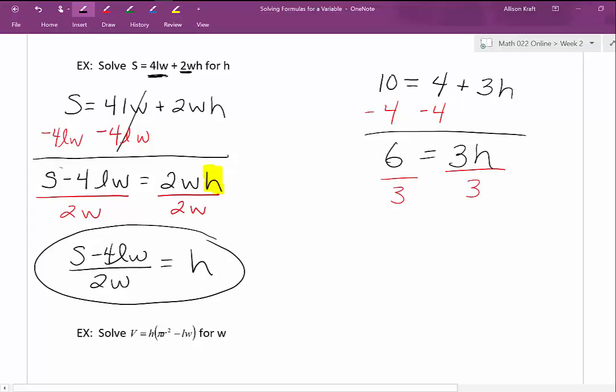We end up with S minus 4LW divided by 2W equals H. This is our solution. Do not try to simplify this fraction. Don't try to cancel out the W's or simplify the 4 and the 2. You'll learn in a later course how to do that properly. Simply canceling those out is not correct.